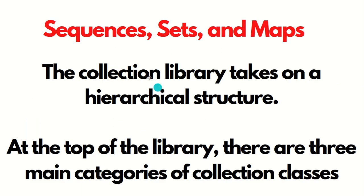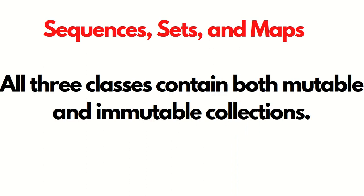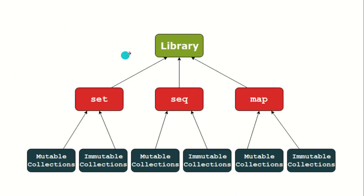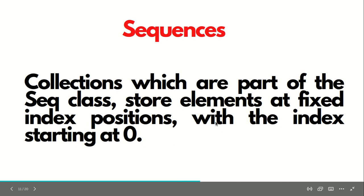So next is sequences, sets, and maps. This collection library takes on a hierarchical structure. At the top of the library, we have three main categories of collection classes: first is sequence, abbreviated as SEQ, sets, and maps. All the classes can contain both mutable and immutable collections. This is a graphical representation — we have the library consisting of the top three: set, SEQ, map. Set is consisting of mutable and immutable, and the same for sequence as well as for map.